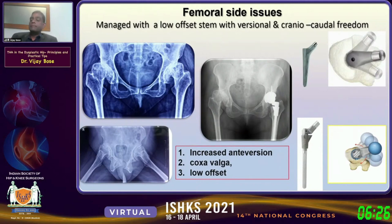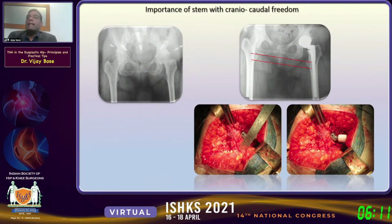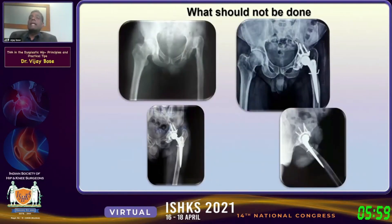Here is a more severe case of coxa valga. You can see the neck cut is about 5 centimeters on the lesser trochanter. If you use a standard stem like a Charnley, you run into problems. It's not only the version that everyone is aware of, but the freedom to have cranio-caudal freedom to put the stem wherever you want. The S-ROM or the cone Wagner fits the bill very nicely.